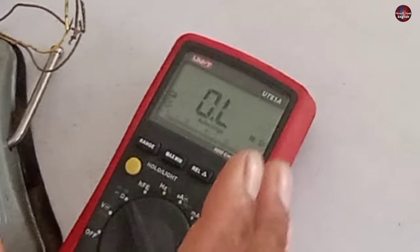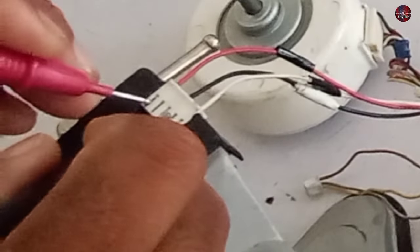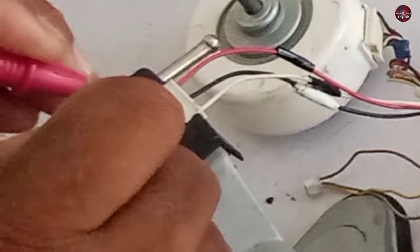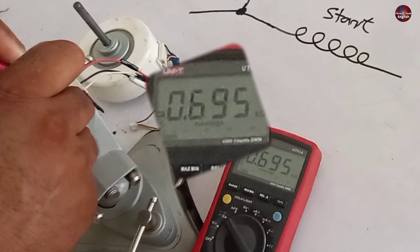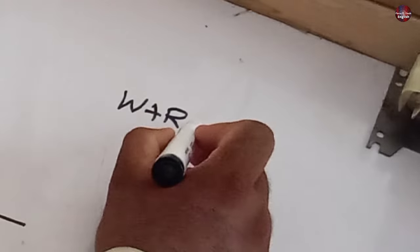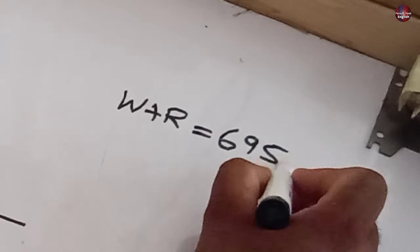I have set the multimeter on ohm mode. First I am checking the resistance value between the red and white. It is showing 695 ohms on the multimeter. So I will write the value between the red and white wires, which is 695 ohms.